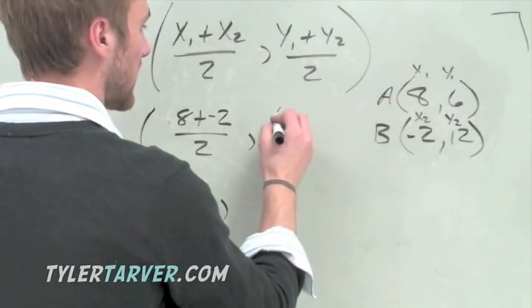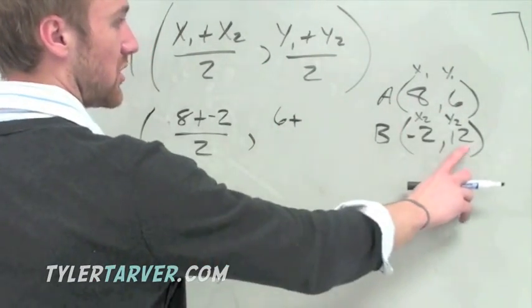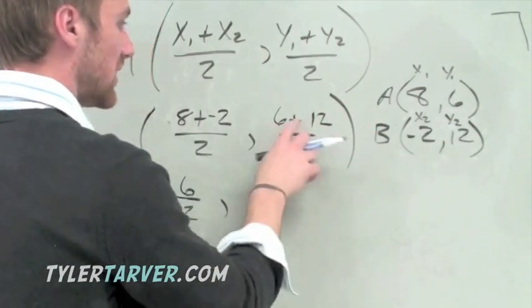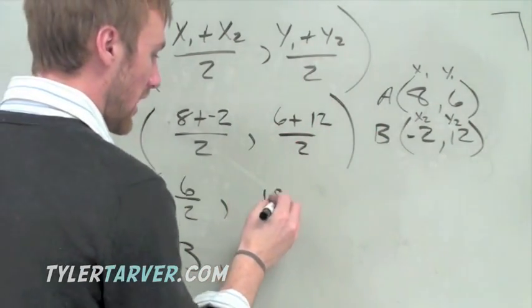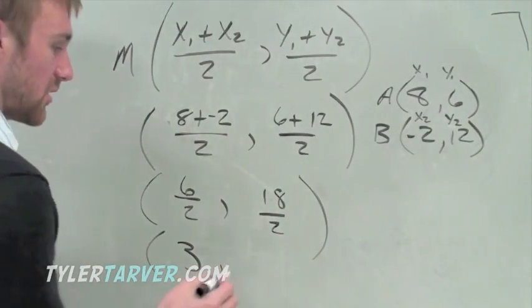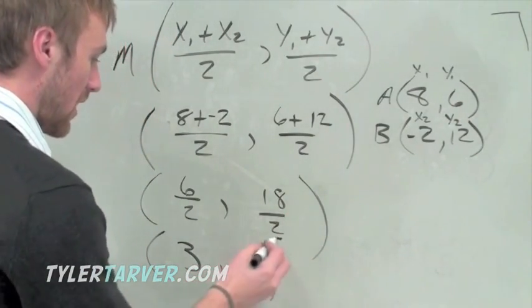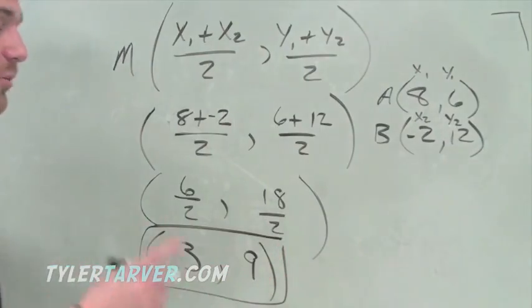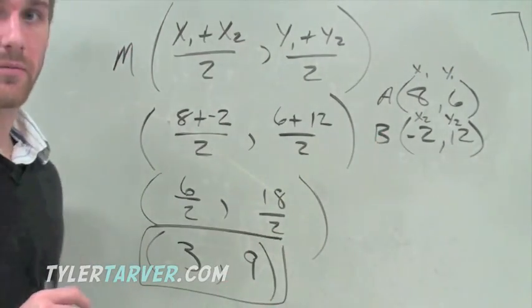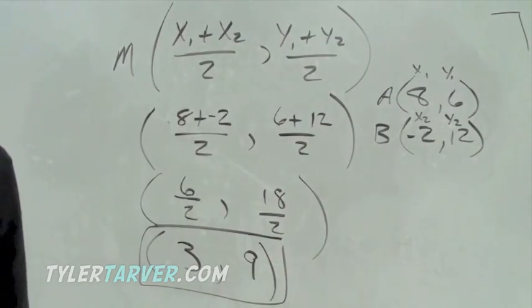Now we've just got to find where our y is going to be. So we take our y1, which is 6, plus our y2, which is 12, and divide it by 2. 6 plus 12 is 18, and it's still divided by 2. And 18 divided by 2 is 9. This is the location of the point that will be in the exact middle of a line that goes through A and B.